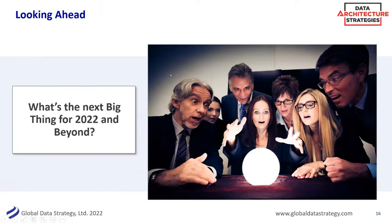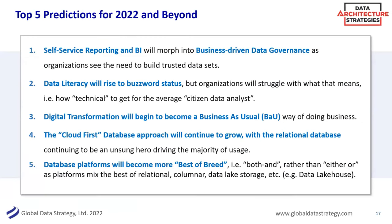Looking ahead, what's the next big thing for this year and beyond? These are my personal opinions, not from the survey. First, I think self-service reporting in BI morphs a little into business-driven data governance — this distinction between business and IT becomes less of a distinction. It's more about how do we build trusted data sets, with both business people and tech people bringing their right skillsets together. Maybe BI becomes an afterthought, just like dot-com — it just becomes of course how you work. I think self-service BI will just become a default.